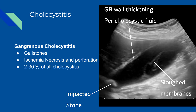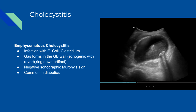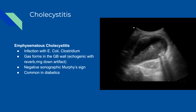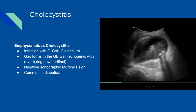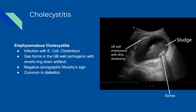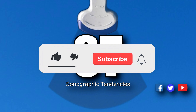Emphysematous cholecystitis is a form caused by gas-forming organisms, typically Clostridium or E. coli. It occurs in about 1% of cholecystitis cases but can develop rapidly, leading to perforation and mortality of up to 15–25% of patients. Sonographically, you'll see an inflamed gallbladder with hyperechoic areas in the gallbladder wall representing gas, with reverberation dirty shadowing or ring-down artifact.